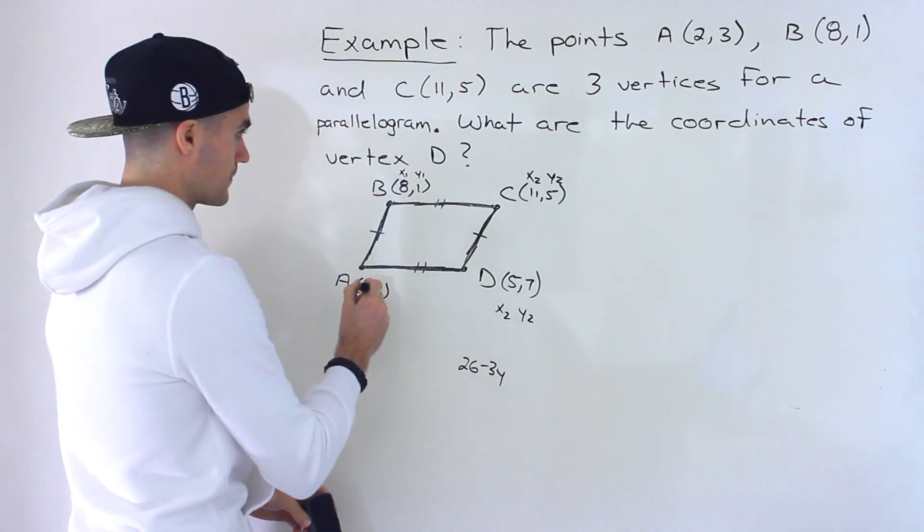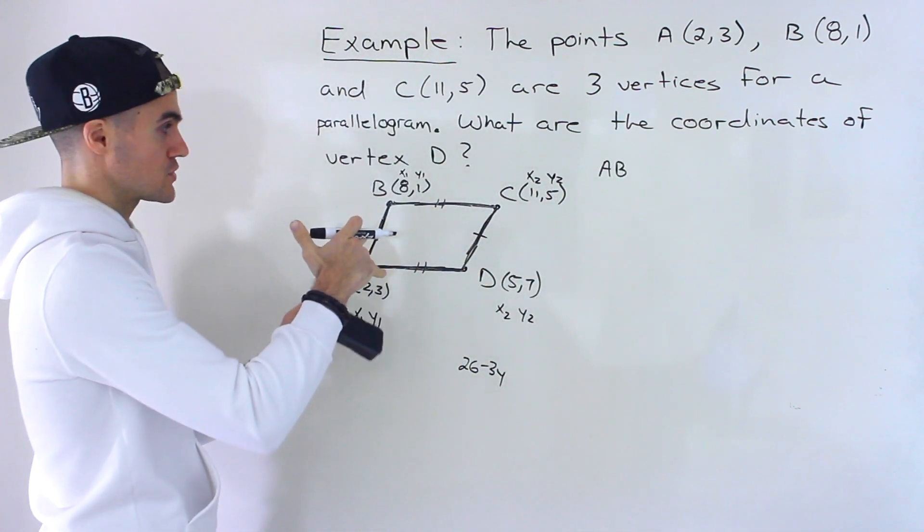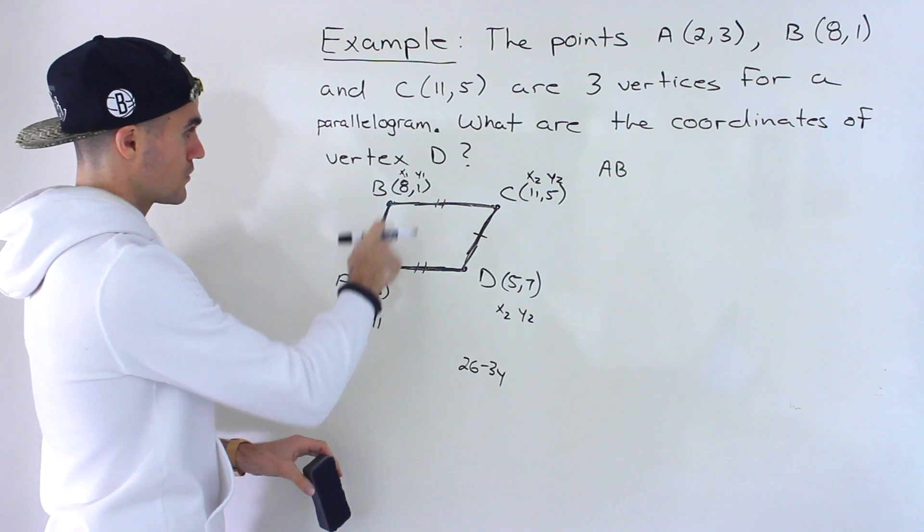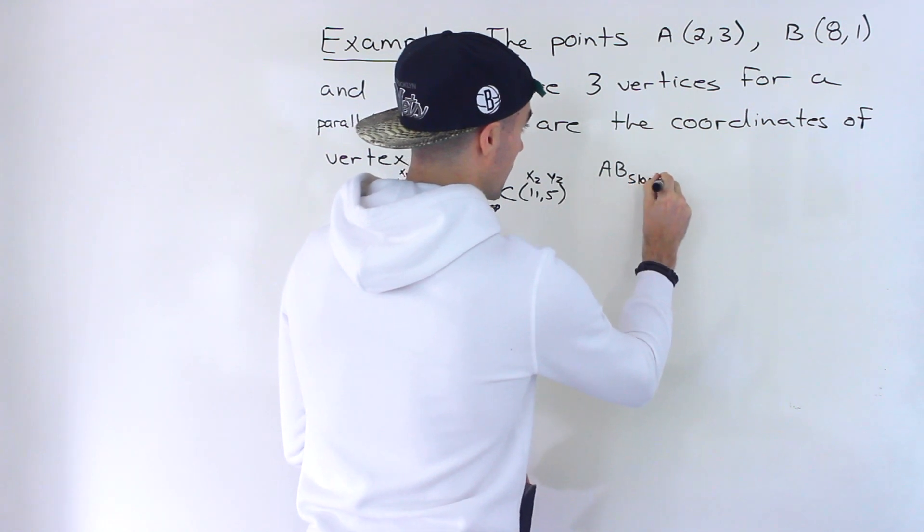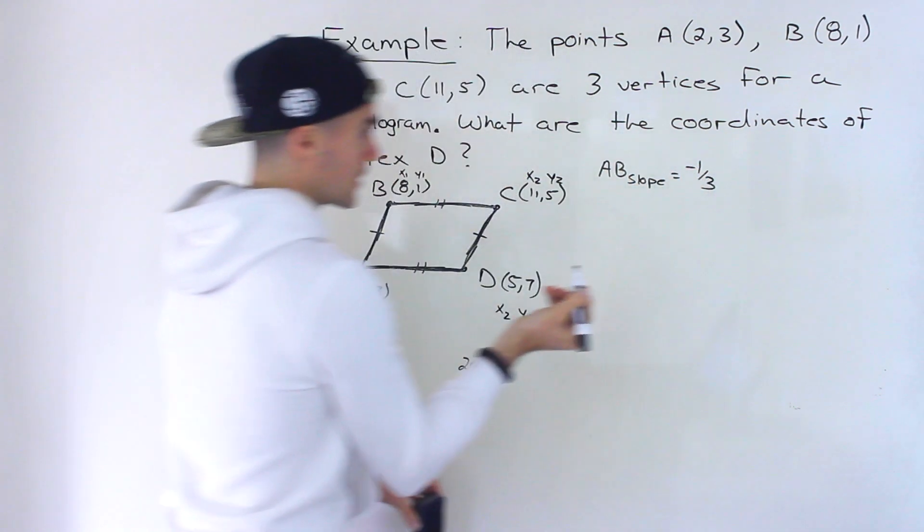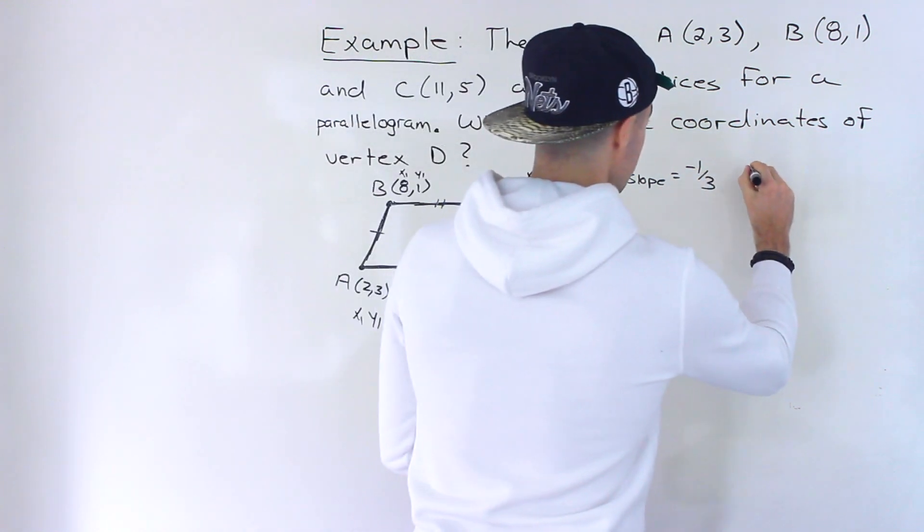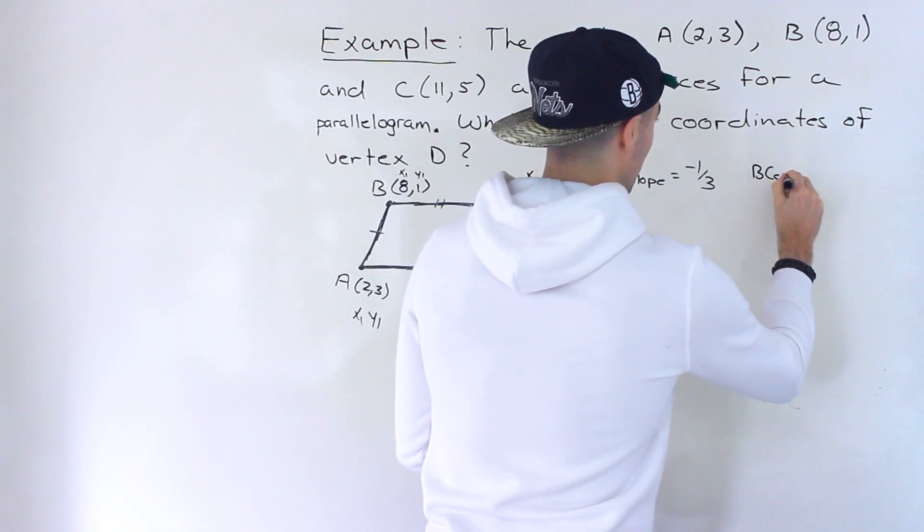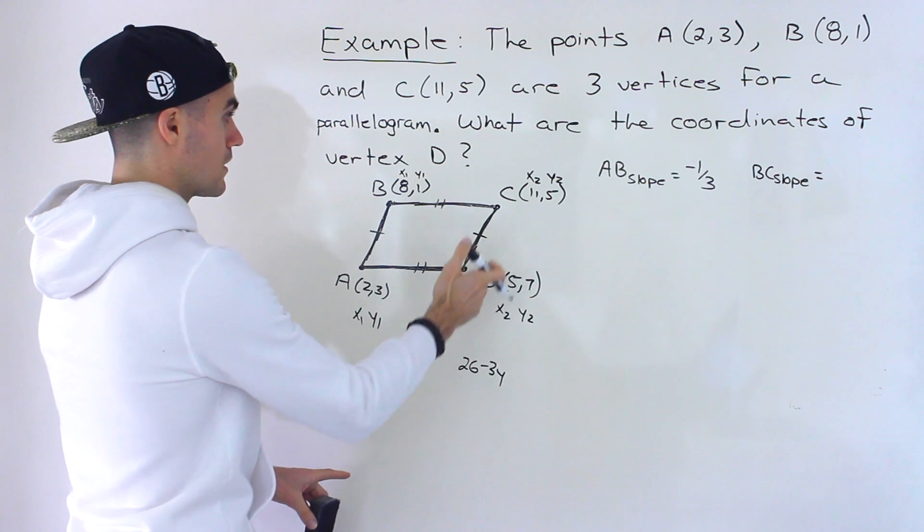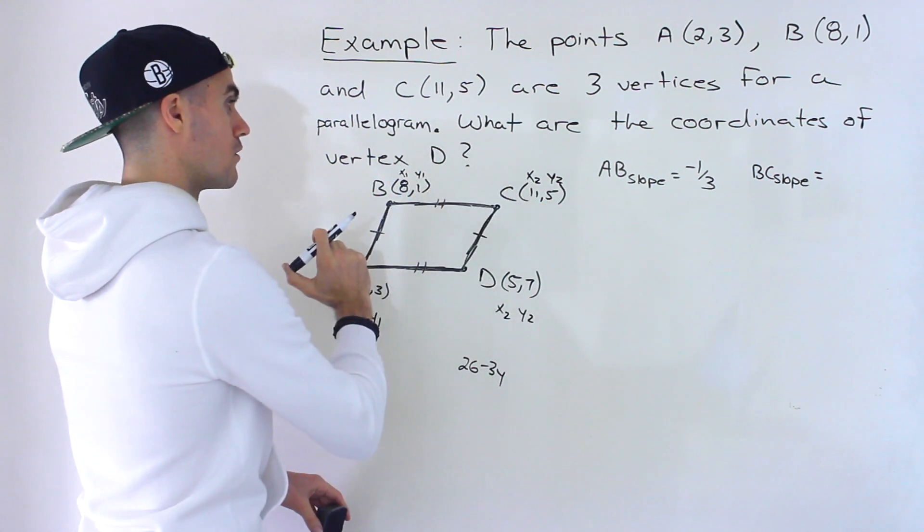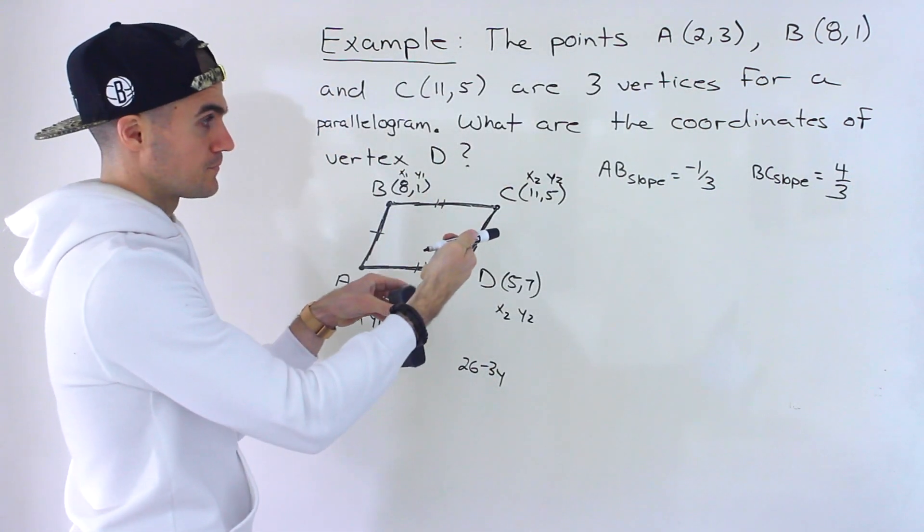So actually, we already found slope AB, remember, that was the left side of that first equation that we worked with. We got 3 minus 1, 2 over negative 6, right? It was negative 1 over 3. So we already had this slope. And then we already had the slope of BC. Right? Because those two slopes weren't dependent on this vertex D. And what we got there was 4 over 3. Yes, I remember now. So really, we already had those slopes from before.